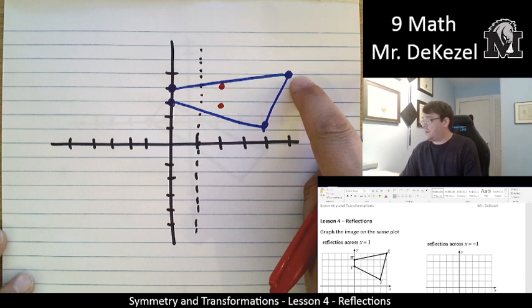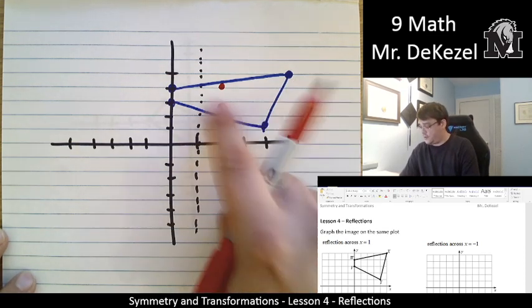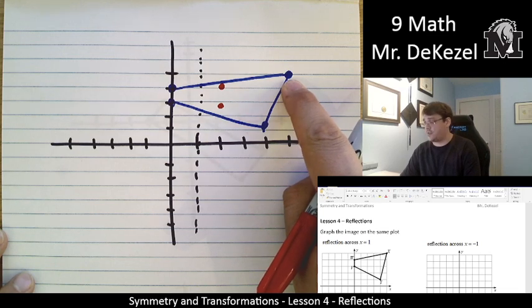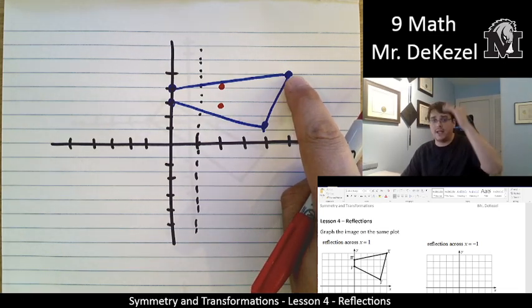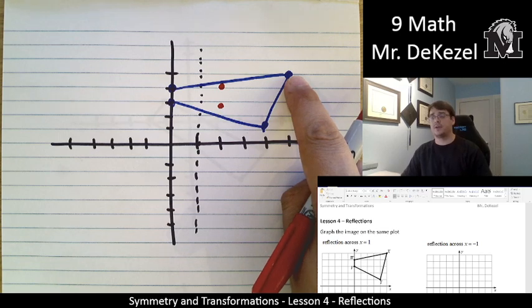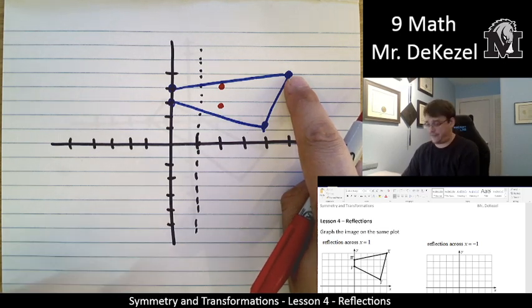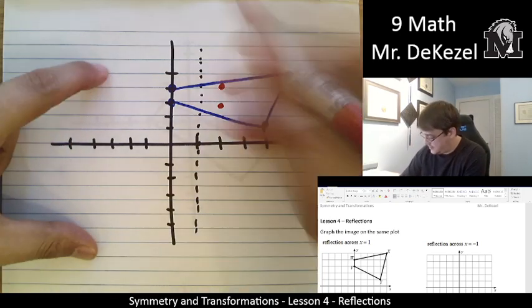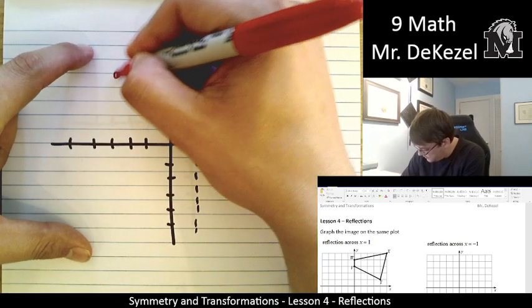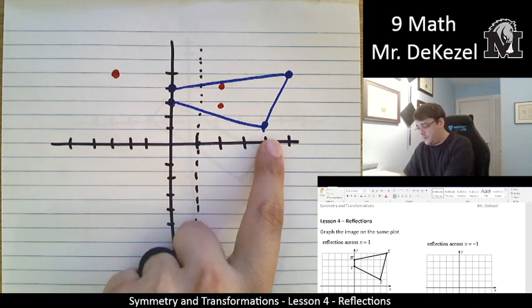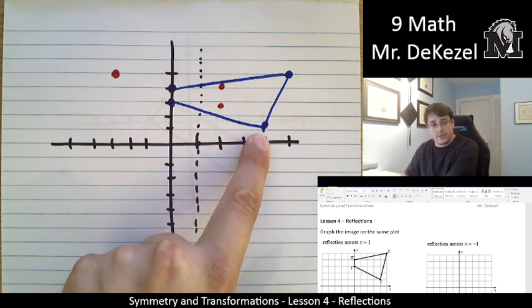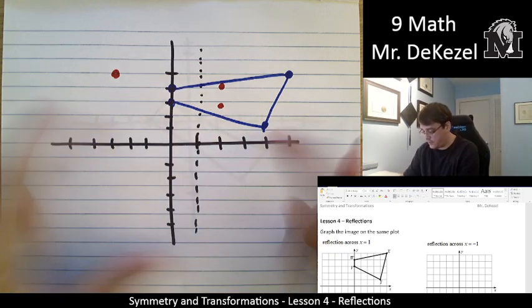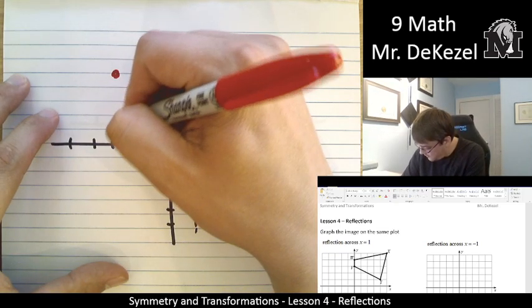This point over here, this point x, is 1, 2, 3, 4 points or 4 values to the right of the line. So it's going to stay at y equals 5 up and down, but it's going to be 4 to the left. So 1, 2, 3, 4 to the left. That is right over here for that point. And this one is 3 to the right, so it's going to be 3 to the left. 1, 2, 3. That is right there.